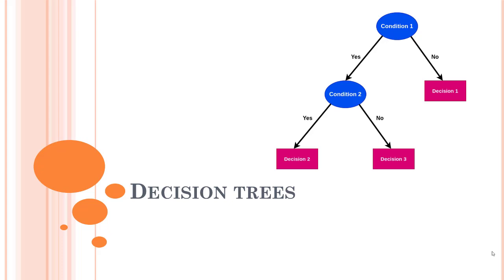There are two kinds of nodes: leaf nodes and decision nodes. Decision nodes are used to make decisions and have multiple branches. Leaf nodes are the output of those decisions — these are the leaf nodes, and these are the decision nodes.